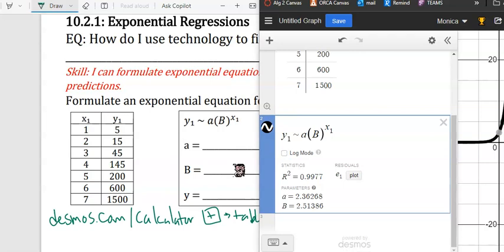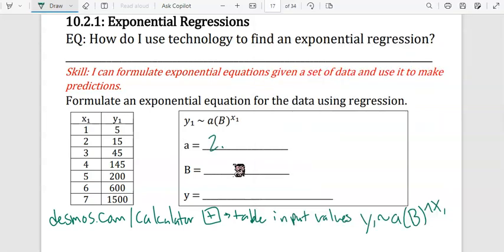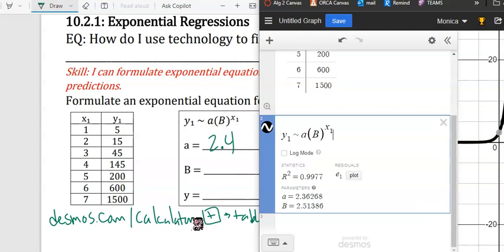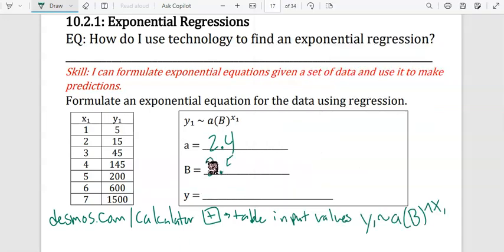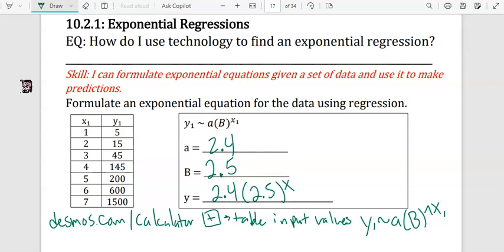Let's approximate these. a is about 2.4 and b, our base, is about 2.5. Our formula is Y equals 2.4 times 2.5 to the x power.